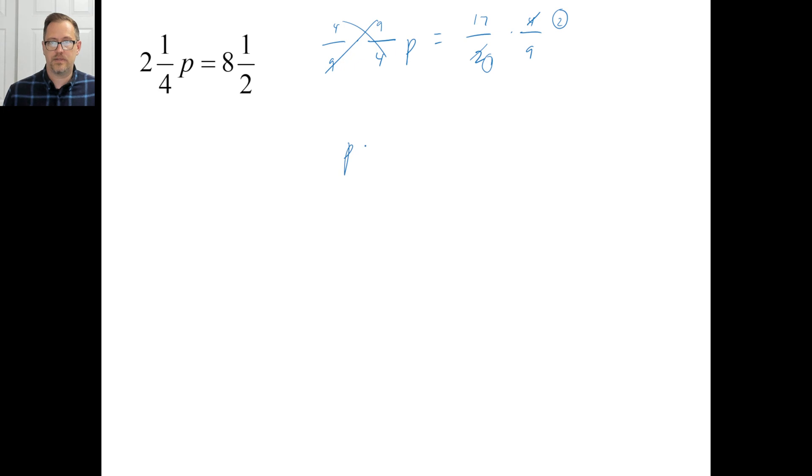And that's going to be a 1. So P is equal to 17 times 2 is 34. 9 times 1 is 9. 34 divided by 9 is about 4. That's a totally sensible answer. Okay, all right.